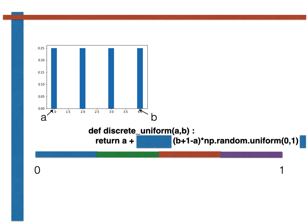We have seen a function like this before. This function is simply generating a uniform continuous random variable that lies somewhere between a and b plus 1.